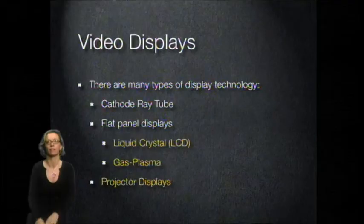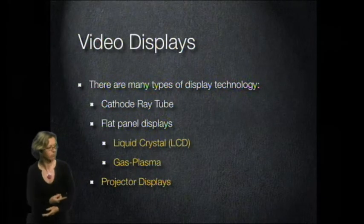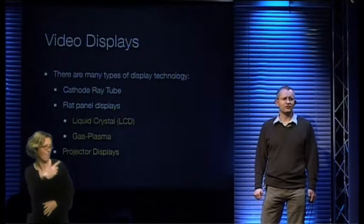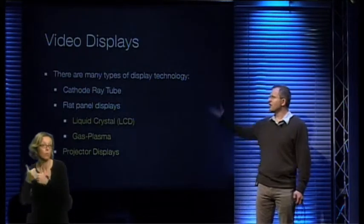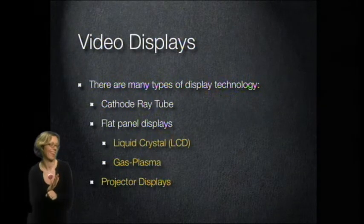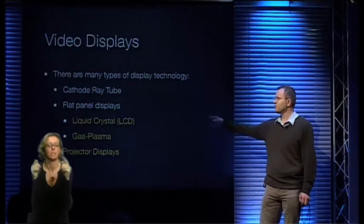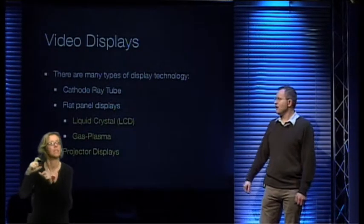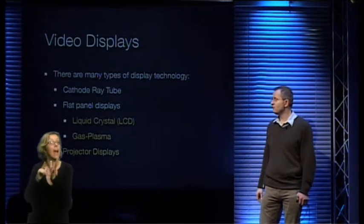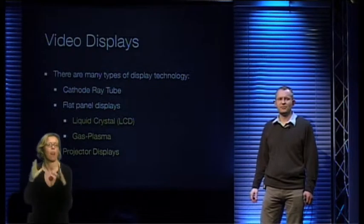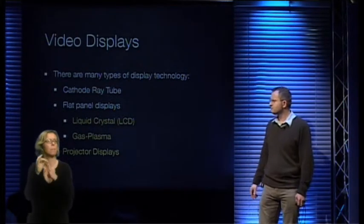Obviously there are a huge number of video displays you could be using. You could have an old school cathode ray tube, very good for producing very high quality. But generally you're probably going to be displaying on some kind of flat panel display, generally an LCD — a liquid crystal display. It might in certain circumstances be a gas plasma screen. Generally large displays are often plasma, and possibly you might be using a projector display. We've got a back projector working in today's presentation, projecting onto a screen.